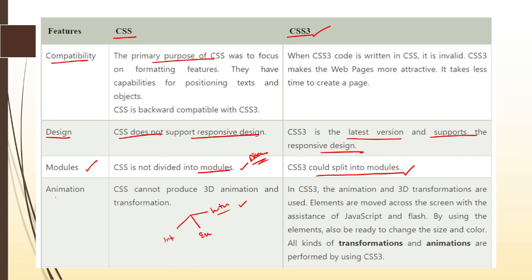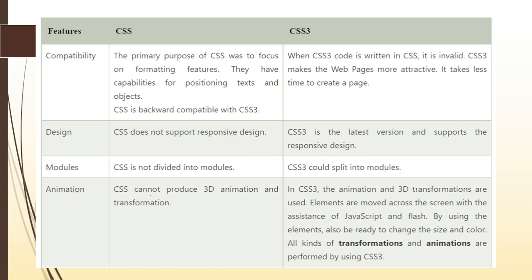The next feature is animation. CSS cannot produce 3D animation and transformation, whereas in CSS3 we can use 3D transformations. All kinds of transformations and animations are performed using CSS3 — that is a big plus point.